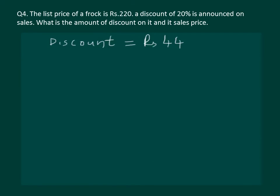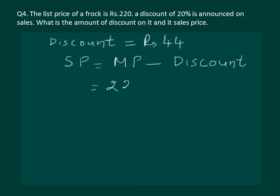We are also required to calculate the sale price of the frock. We have calculated that the discount is rupees 44. Sale price equals marked price minus discount — our marked price was rupees 220, and if we subtract the discount of 44 from it, we get the sale price, which is rupees 176.